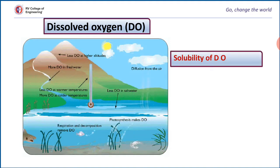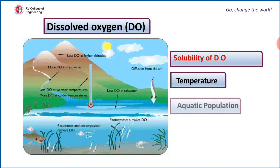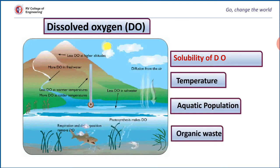Oxygen is not completely soluble in water. The solubility of oxygen mainly depends upon factors like temperature, aquatic population, and organic waste.